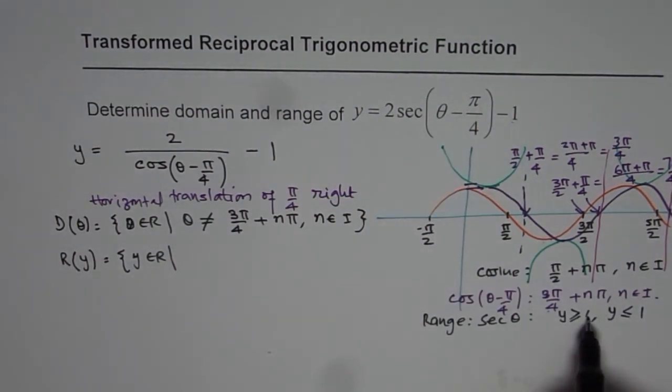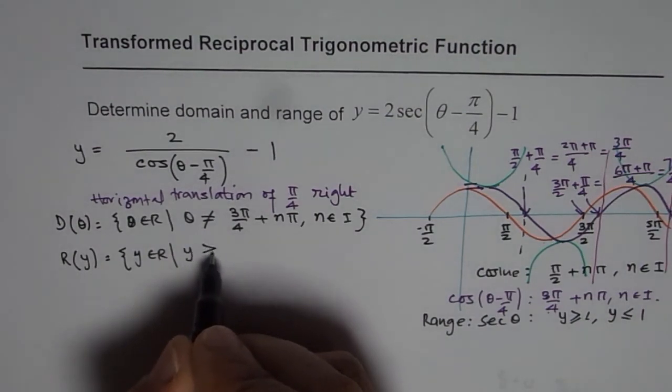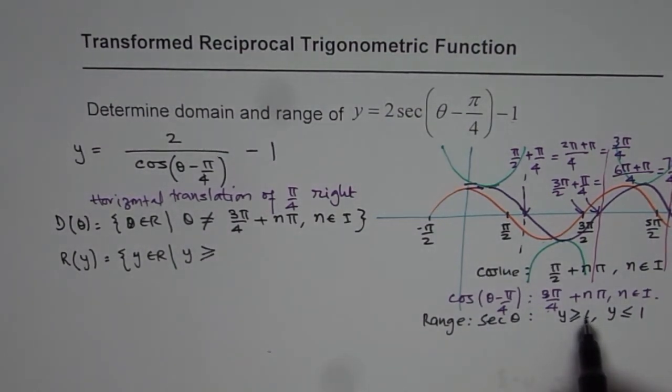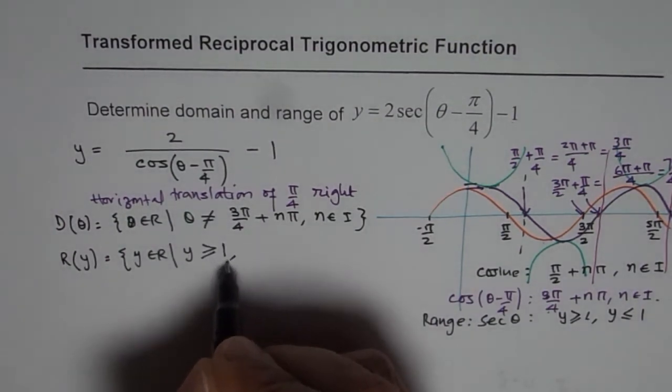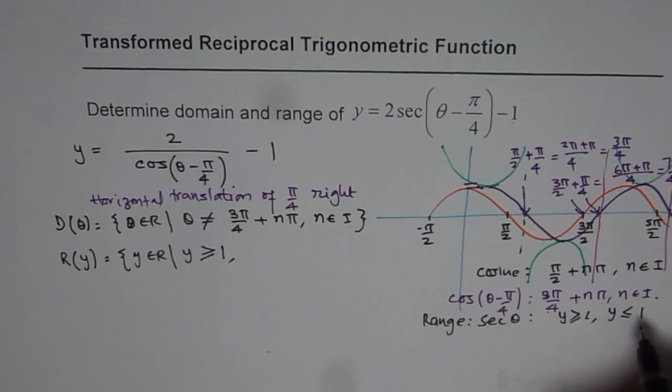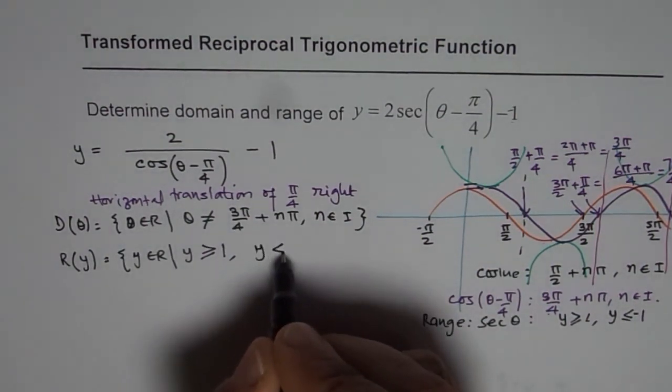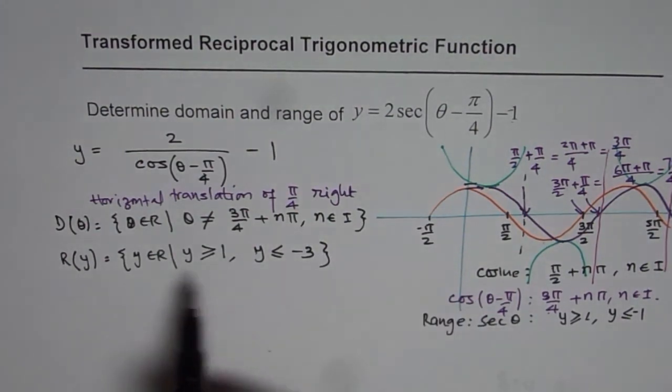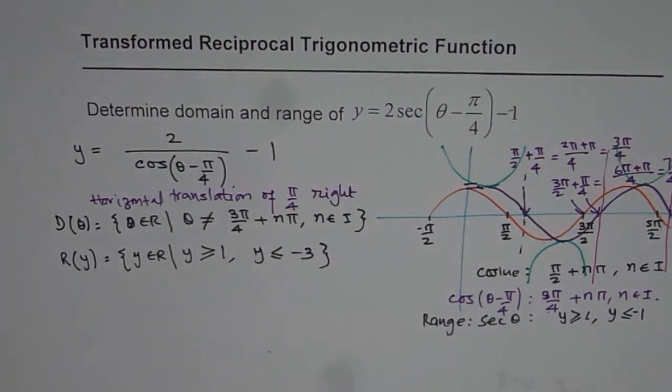Now the transformation is that the y values get multiplied by 2 and then take away 1. So if I multiply this by 2 and then take away 1, I get y greater than equal to 1. However, this value which is y less than equal to minus 1, if I multiply by 2 I get minus 2, and take away minus 1 will give me minus 3. So here y should be less than equal to minus 3. So that is how we get the range of this function.